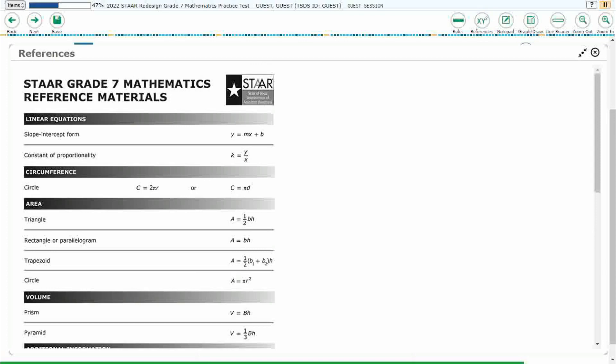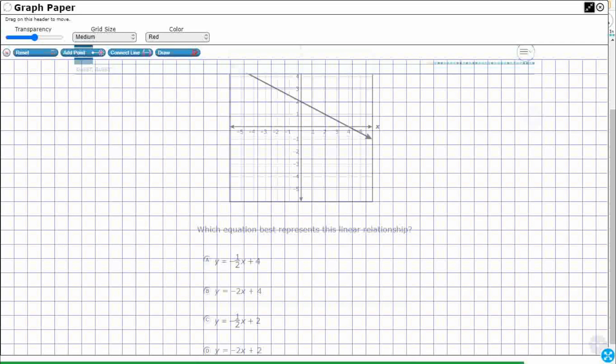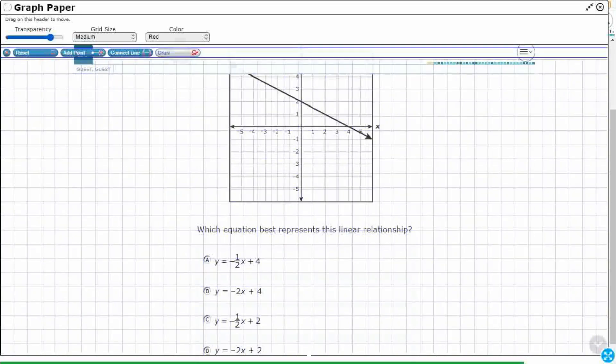If we take a look at our reference chart, look at that very top line there. Linear equation, slope intercept form, y equals mx plus b. So that's the form that this is in, and let's take a look at that, kind of break it down.